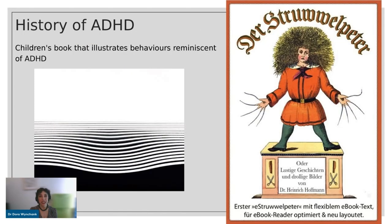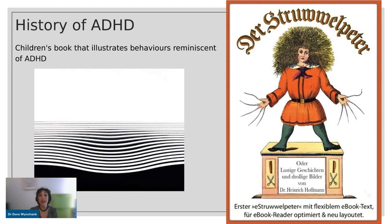Struwwelpeter is a warning to children not to misbehave. It illustrates all sorts of disobedient and naughty behaviors, some of which really resemble ADHD — such as a child who hasn't cut his nails or brushed his hair. All these children described in Struwwelpeter have terrible ends. It's a very harsh exposé with a strong moral message, which is of course not the way we see ADHD at all. We now see ADHD as a neurodevelopmental problem — people cannot be punished for their symptoms.